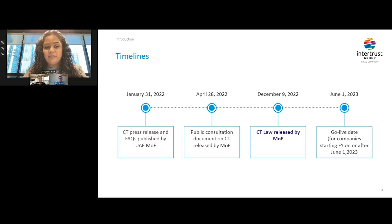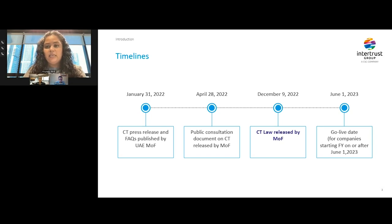If we look at the timeline shown on this slide, the first formal announcement on introduction of corporate tax was made by the Ministry of Finance on 31st January last year. This was followed by a public consultation document issued in April, where the public was invited to make comments on the architecture of the corporate tax legislation. The legislation was finally released on 9th December, published in the Official Gazette on 10th October, and came into force on 25th October. The law applies to all businesses for financial years starting on and after 1st June 2023. So if your financial year is a calendar year, the corporate tax will apply to your business from 1st January 2024.